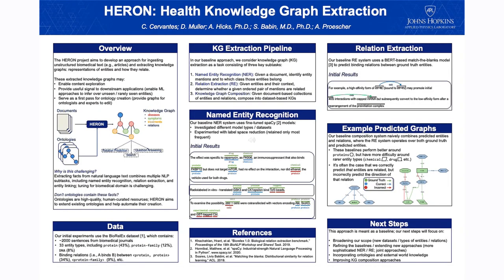Hello, my name is Chris Cervantes from the Johns Hopkins Applied Physics Laboratory, and I'd like to talk about the HERON project. The overall goal of HERON is to take unstructured biomedical text like PubMed articles and create representations of entities and how they relate — specifically, knowledge graphs where nodes are entities and edges are typed relations. These knowledge graphs can be used for facilitating content exploration, helping downstream applications like search or question answering, and aiding in ontology creation. In our baseline approach, the knowledge graph extraction task has three pieces: named entity recognition (where are the entities and what type do they belong to), relation extraction (determining if entity mentions are related), and composition (bringing everything together).